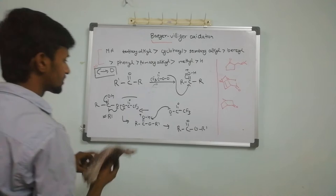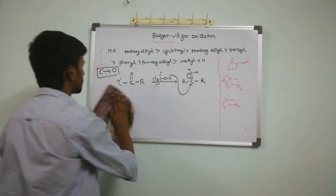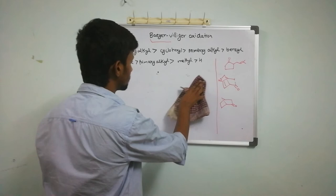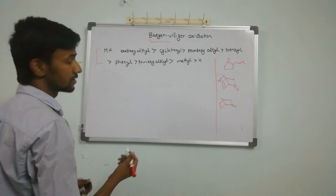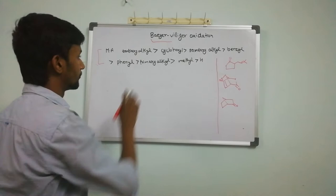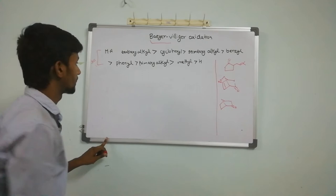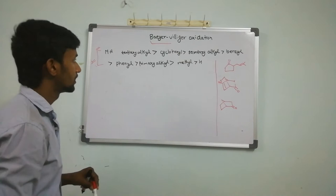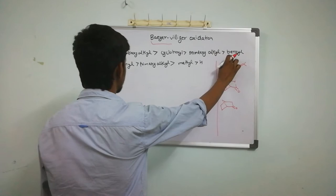One thing I want to tell you: if you go through some books, you will see that the migratory aptitude order is somewhat different in different books. I recommend you go through this book because it is taken from Jack Lee, so this should be correct. The order is: tertiary alkyl, then cyclohexyl, then secondary alkyl, followed by benzyl, phenyl, primary alkyl, methyl, and lastly hydrogen.